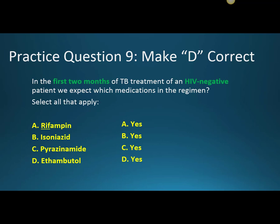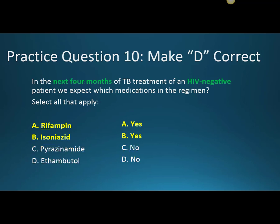Question nine: in the first two months of TB treatment of an HIV-negative patient, we expect which medications? We would expect all four — Rifampin, Isoniazid, Pyrazinamide, and Ethambutol — for quad therapy. Practice question ten: in the next four months, the continuation phase of treatment in an HIV-negative patient, we expect which medications? It would be Rifampin and Isoniazid.